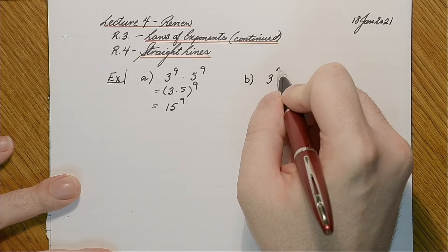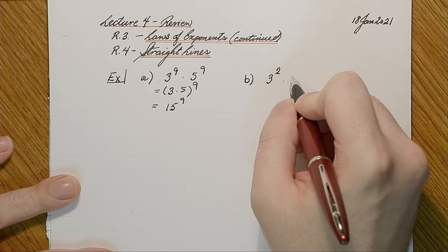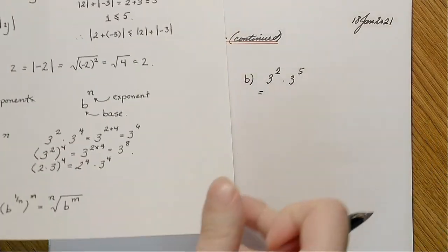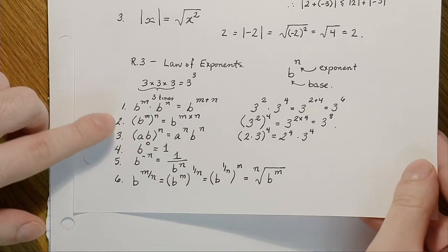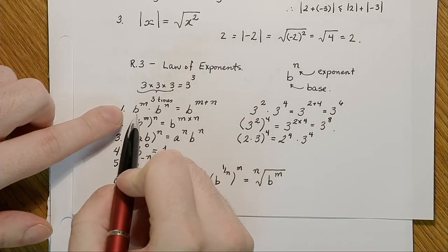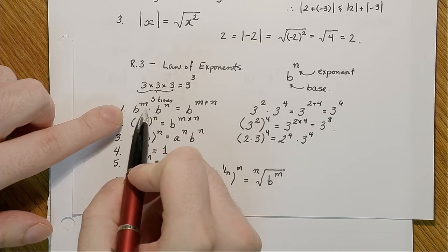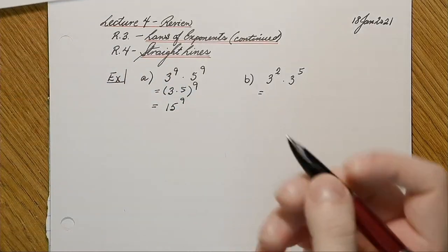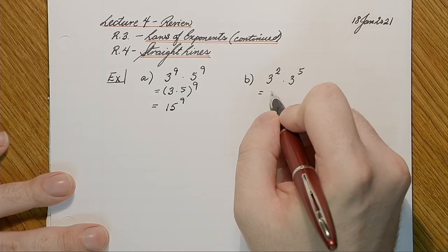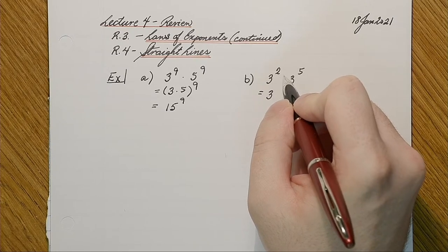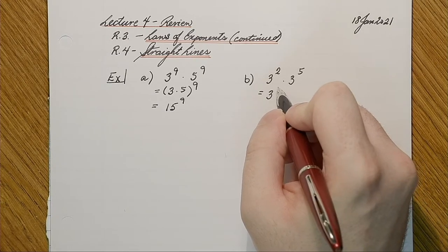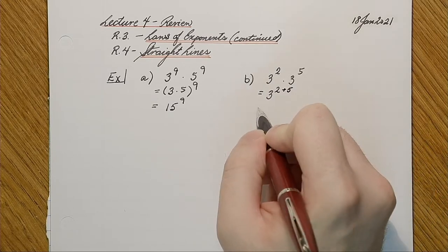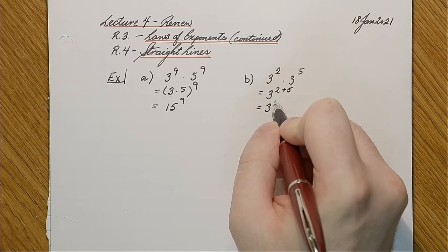Here's another example: we have 3 squared times 3 to the fifth. Using another rule — if the bases are the same and we have different exponents, we just add the exponents together. In this case we have the same base but different exponents, so it's 2 plus 5, and that's equal to 3 to the seventh.